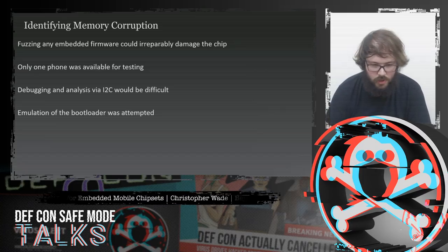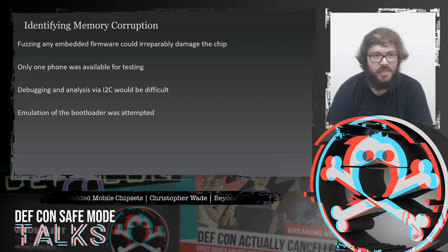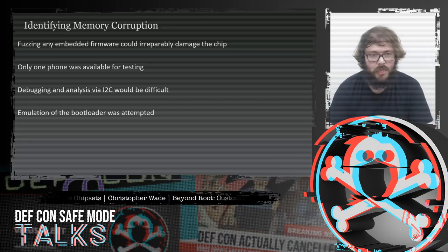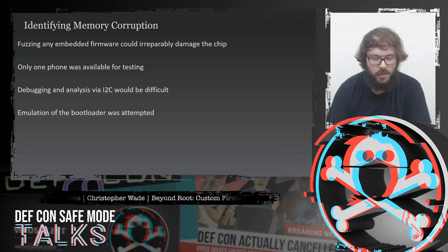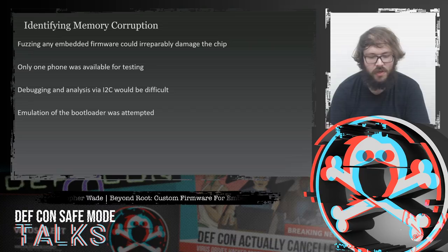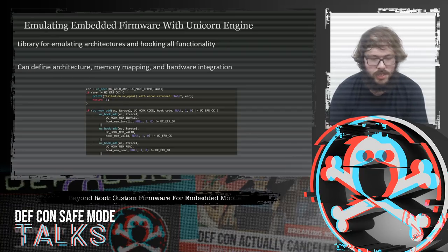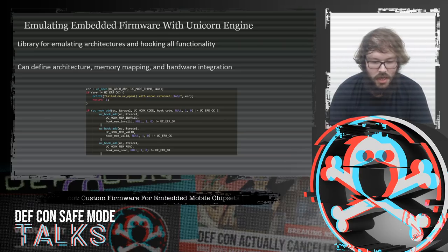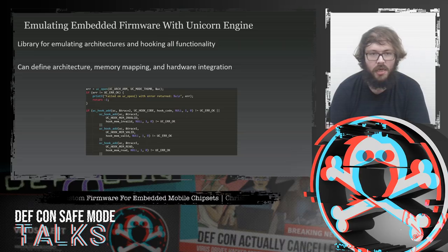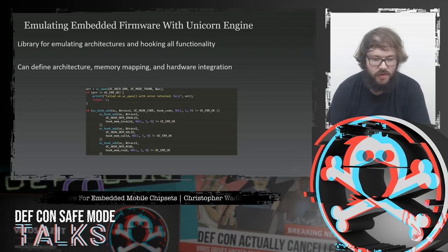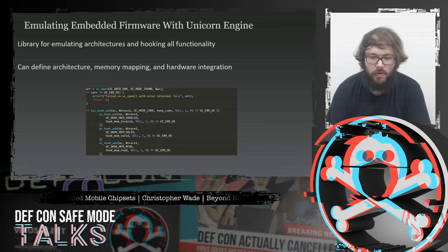Because I only had one phone and didn't want to break it, I didn't want to fuzz the hardware directly. Instead, I used the dumped bootloader and looked into ways to emulate it effectively on a host computer. I ended up using the Unicorn engine — a library for emulating architectures and hooking all functionality of a firmware — where you can define the architecture, memory mapping, and hardware integration to fit your needs.